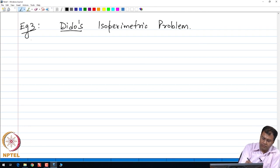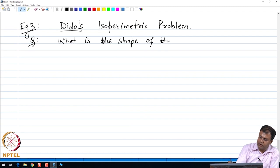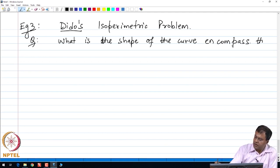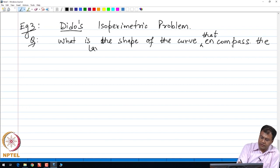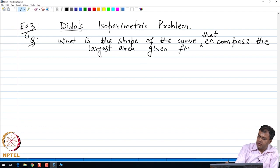It turned out that this queen was very intelligent. She figured out that the rope has to be organized in such a way that it swipes the area of the circle, and hence known as the Dido's isoperimetric problem. The problem is: what is the shape of the curve which encompasses the largest area given fixed length of the curve?